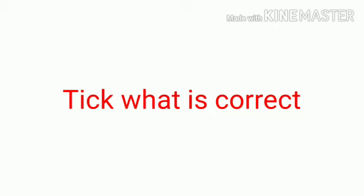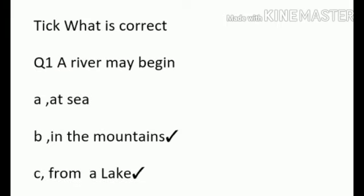Tick what is correct. Listen to the first question: a river may begin. Options are at sea, in the mountains, from a lake. I already ticked the answers: in the mountains and from a lake. These ticked answers are called sources. Source is a place where the river begins. Here two sources are given: in the mountains and from a lake.